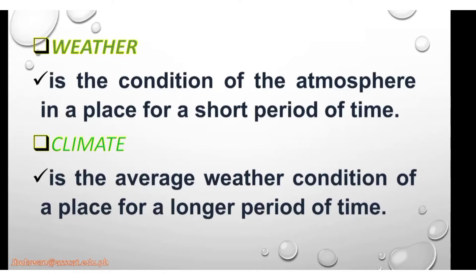First, we need to define what is the difference between weather and climate. Weather is the condition of the atmosphere in a place for a short period of time, while climate is the average weather condition of a place for a longer period of time. Climate is classified as Type 1, Type 2, Type 3, and Type 4, in which you need to know the dry and the wet season. Weather, on the other hand, is an everyday forecast.